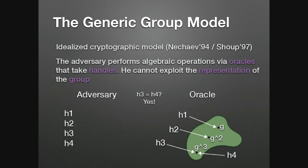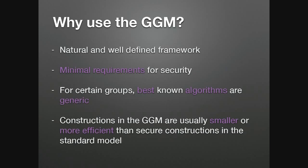This is not the standard model, but there are reasons to work in the generic group model. One is that it gives minimal requirements for security — everything should be secure in the generic group model; otherwise there exists an algebraic attack and you should not use that construction. Another reason is that for some groups, like elliptic curves, the best-known algorithms are generic. Also, in the generic group model we can prove lower bounds and build optimal constructions, which is not easy to do in the standard model.